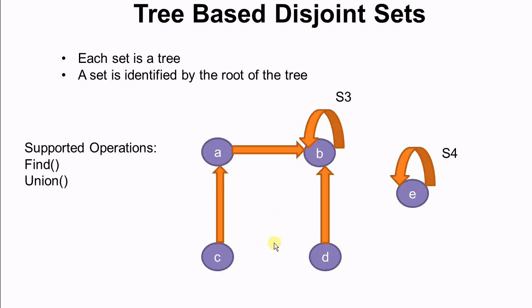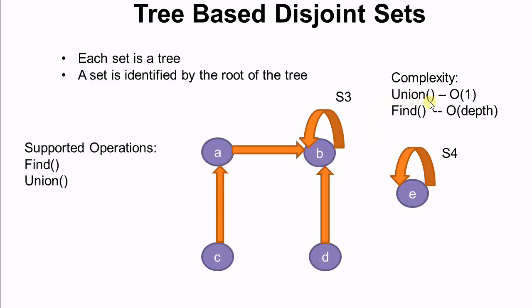Now let's consider the complexity of tree-based disjoint sets. Union is very fast — it only requires changing one pointer, for example the pointer of A originally pointing to itself now points to B. So union only takes constant time. Find takes time proportional to the depth of the tree. If we try to find the disjoint set of C, we first find its parent A, then find A's parent B. So the time of find is O(depth).